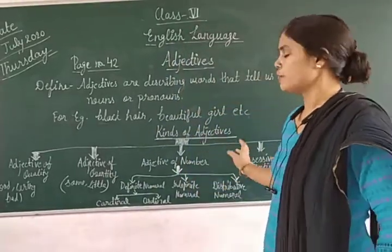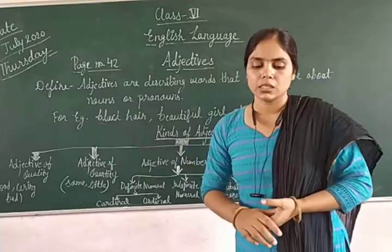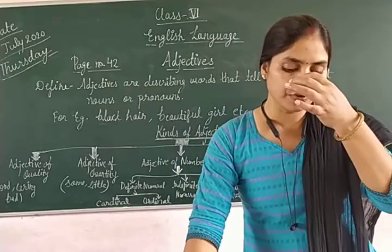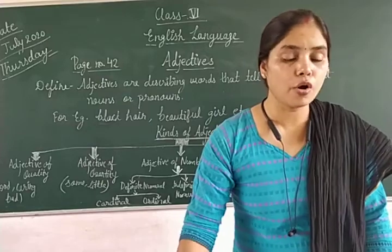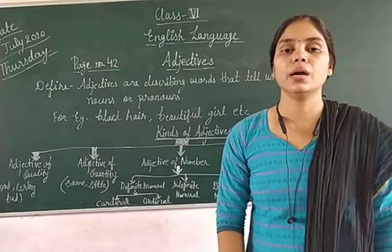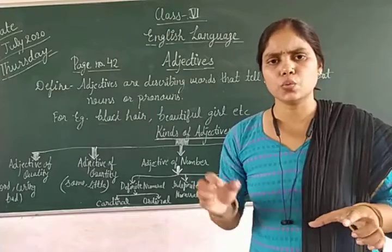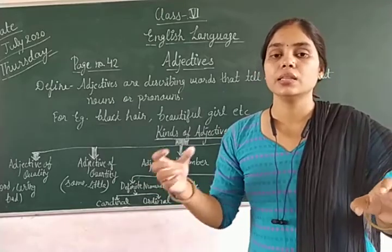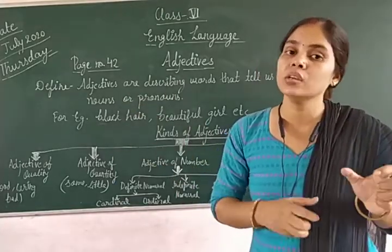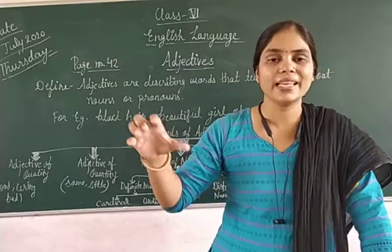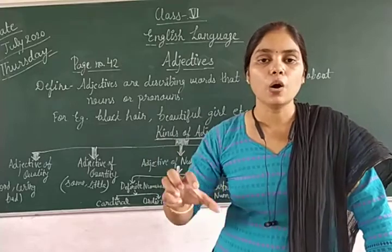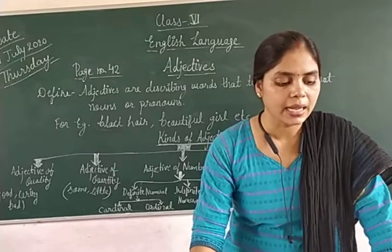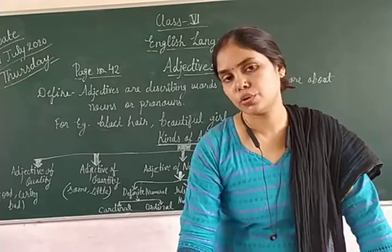Now move on to adjective of number — this is a wide subject. Adjectives of number inform us how many things there are, meaning we can count them. They are used for countable nouns.